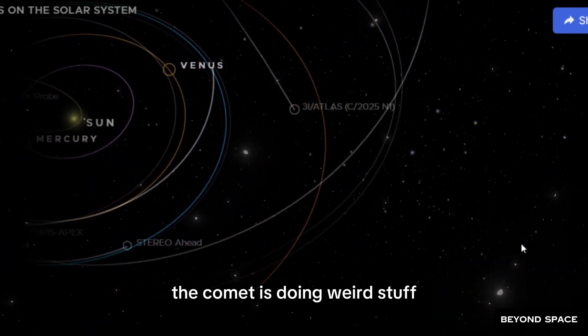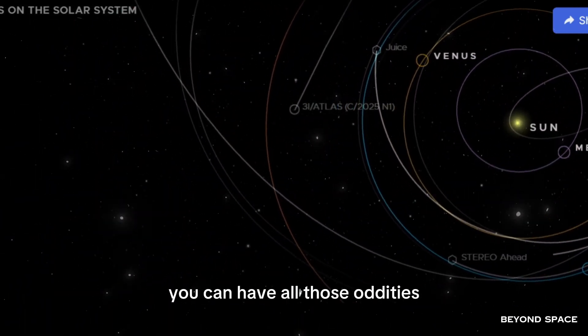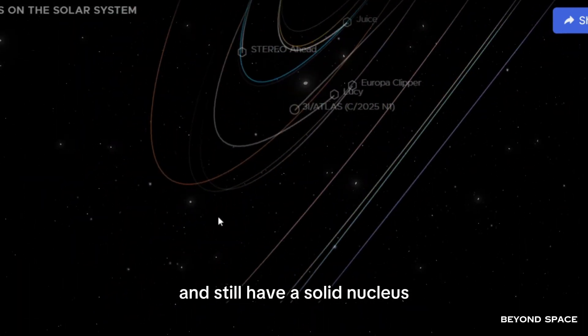Those observations were real. The comet is doing weird stuff. But here's the thing everyone missed. You can have all those oddities and still have a solid nucleus.